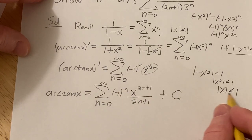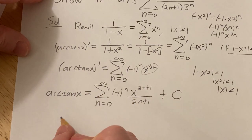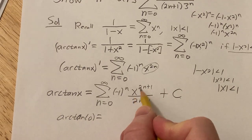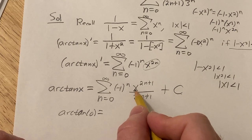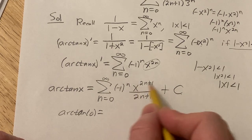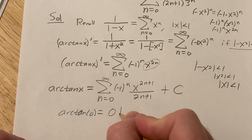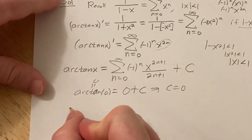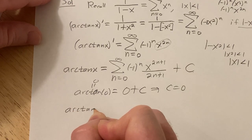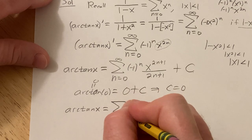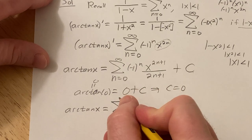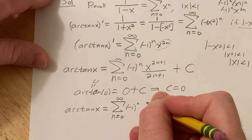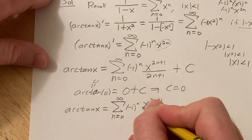Plugging in x equals 0 — because 0 certainly satisfies the convergence condition — we get arctan of 0. Plugging in 0 into the series, all the terms are 0 as well, because 0 to the 1 is 0, and the rest are also 0. And arctan of 0 is 0. So we get C equals 0, and we have the arctan of x equal to the infinite sum — we just came up with the power series for arctan, which is what the hint told us to use to come up with this identity.